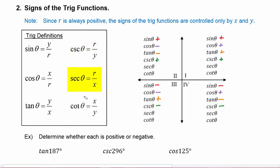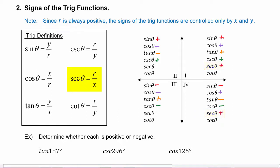Secant theta uses the same two variables as cosine theta — just the reciprocal — so secant theta will be positive in quadrants one and four whenever x is positive, and it will be negative in quadrants two and three whenever x is negative.